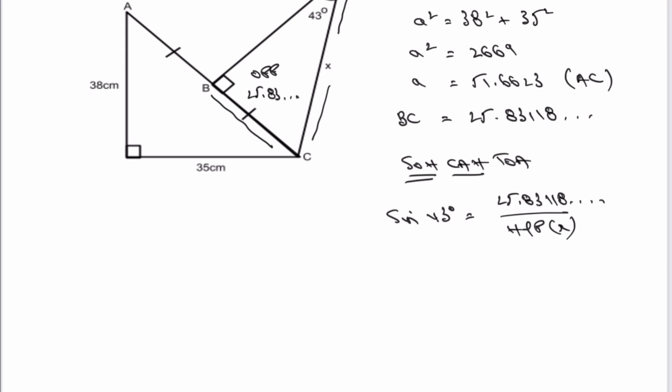I need to make the hypotenuse the subject of the formula, so hypotenuse equals 25.83118 dot dot dot divided by sine of 43°.